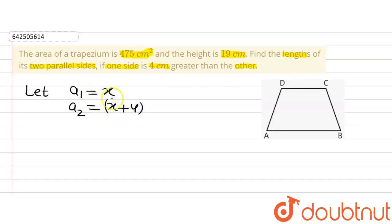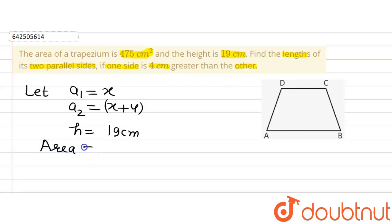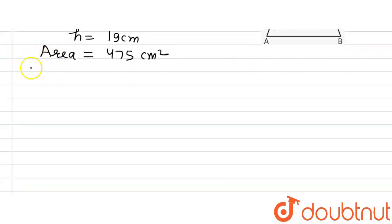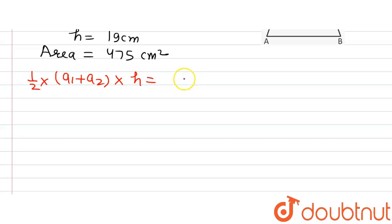So these are the lengths of the two parallel sides of the trapezium. We are also given the distance between the parallel sides, which is 19 centimeter, and the area is 475 centimeter square. The formula for area of a trapezium is half multiplied by the sum of parallel sides, that is a1 plus a2, multiplied by the distance between the parallel sides h, equals 475.